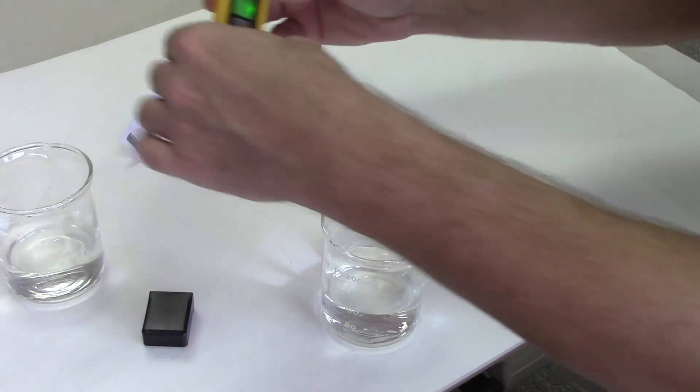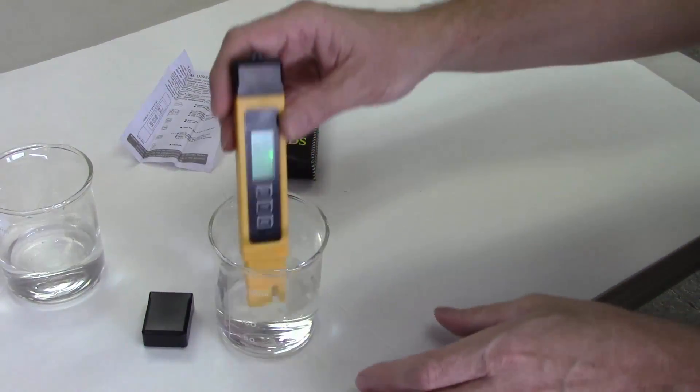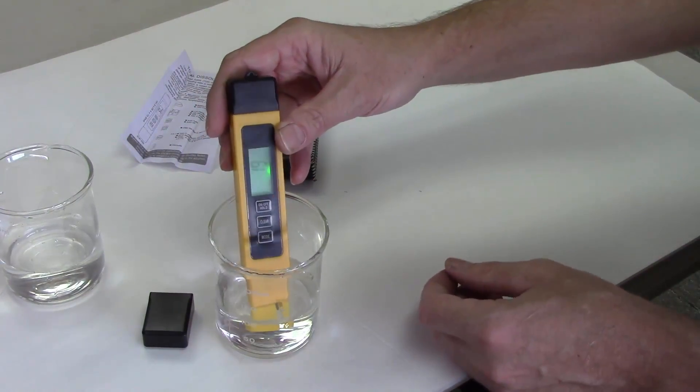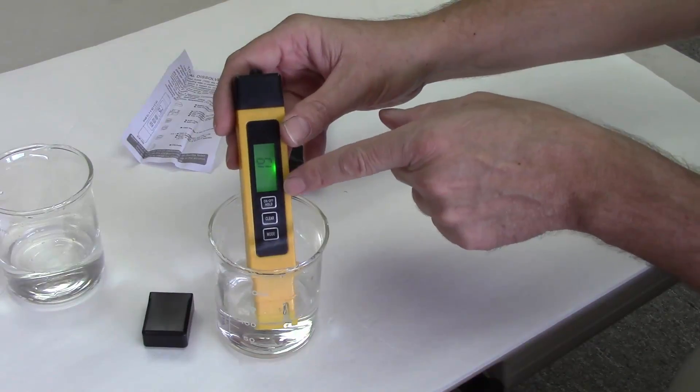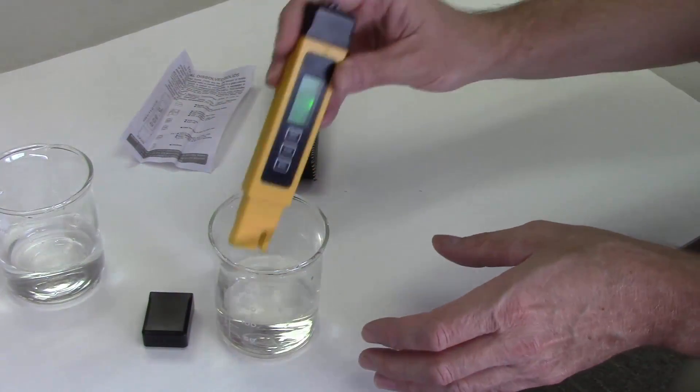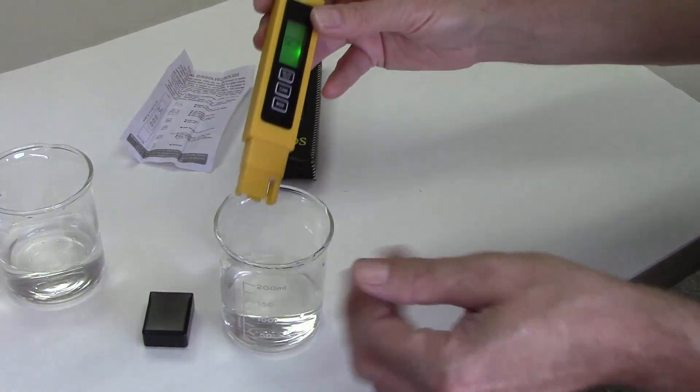And then you press the clear button and go over to my next sample. We have the RO water, and the display screen, which I don't know if the camera picks up or not, does not turn red because you're not getting a high enough value on there. So my RO water tested at 19 parts per million.